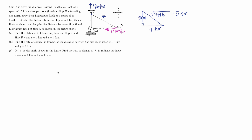Part B asks us to find the rate of change in kilometers per hour of the distance between the two ships when X is 4 and Y is 3. Ship A is traveling at 15 kilometers per hour, represented by dx/dt. Because the value of X is getting smaller — it's decreasing — we represent that as negative 15 kilometers per hour.